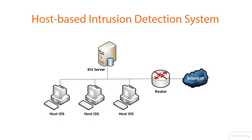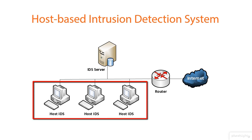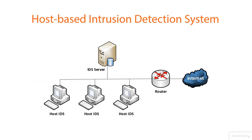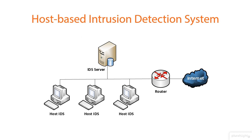Here's an example of a host-based intrusion detection system. As you'll notice, we have the host IDS on several PCs, along with our router and the internet, showing an internal network. There is an IDS server that the hosts can report into, but the actual scanning and alerting is done on the host, not on the server. The server acts more as a management console and aggregation point, while the host IDS is where the monitoring, actions, and alerting take place.